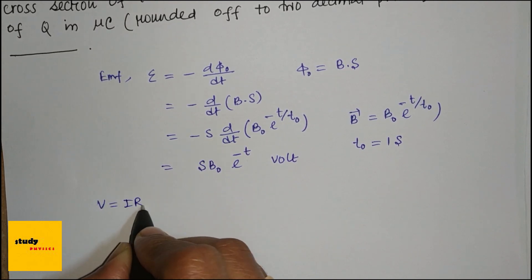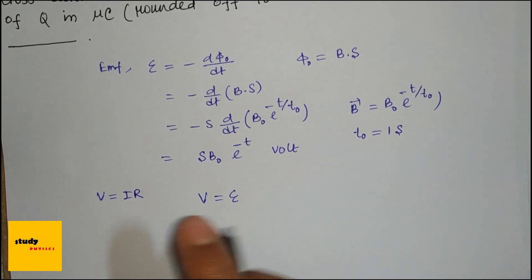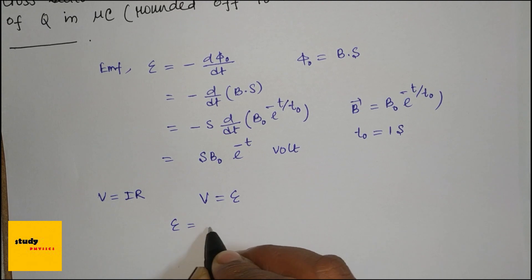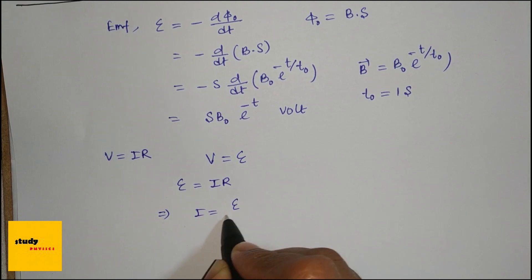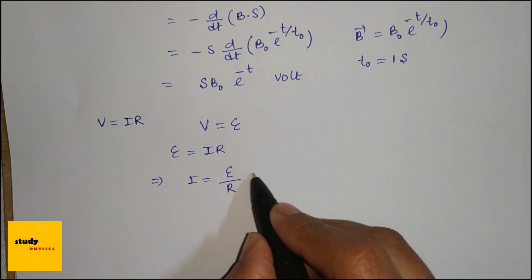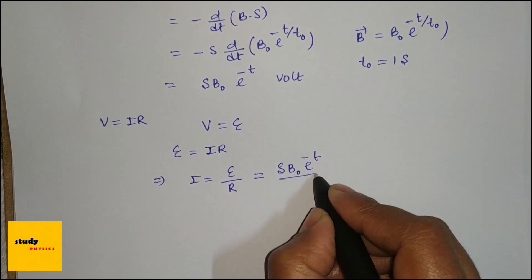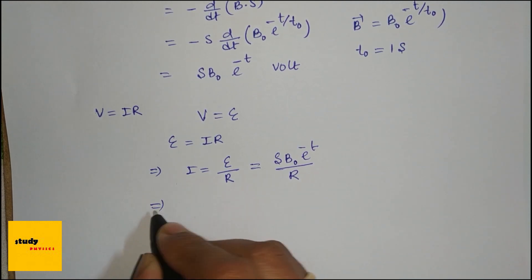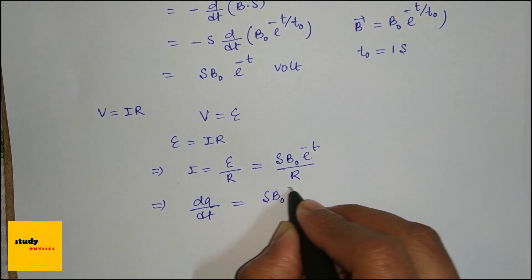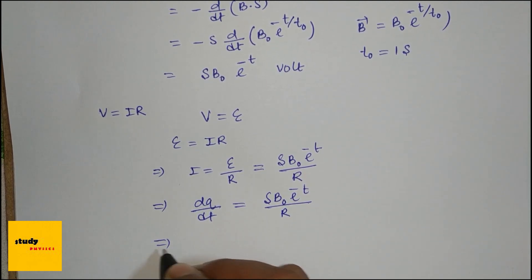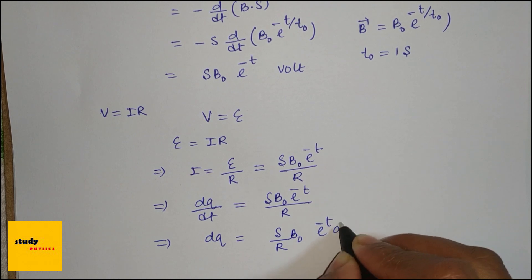We know V = IR, and we can write ε = IR. So I = ε/R = (S·B₀·e^(-t))/R. And I = dq/dt, so dq/dt = (S·B₀·e^(-t))/R. Therefore, dq = (S·B₀/R)·e^(-t)·dt.